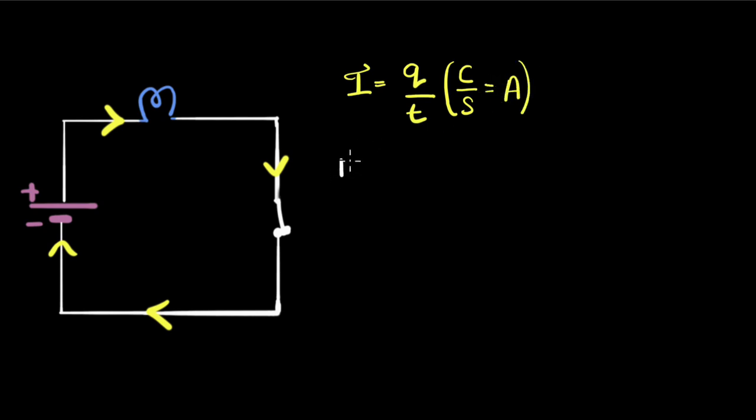Let's take a couple of examples. So for the first example, let's say we have charges moving from P to Q, let's say this way. And we find that there are about 10 coulombs of charges are flowing through this point, let's say, from P to Q in two seconds.